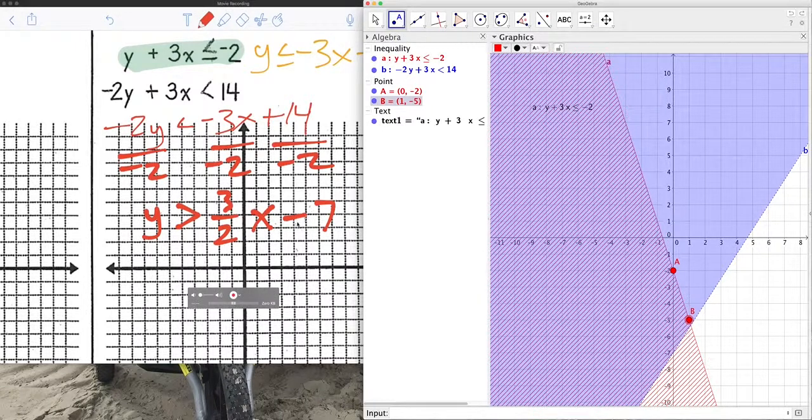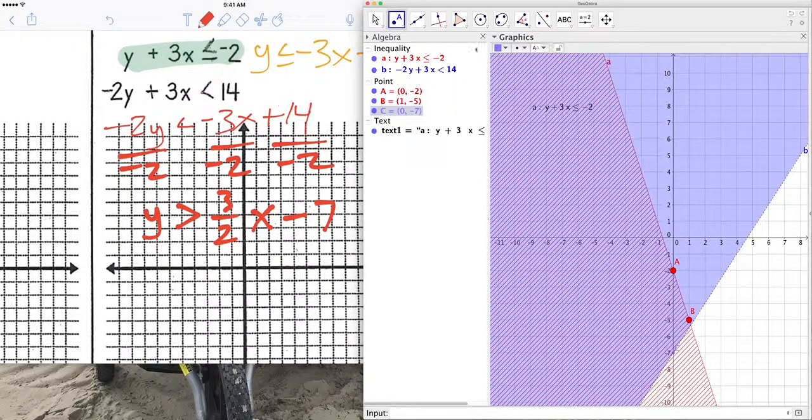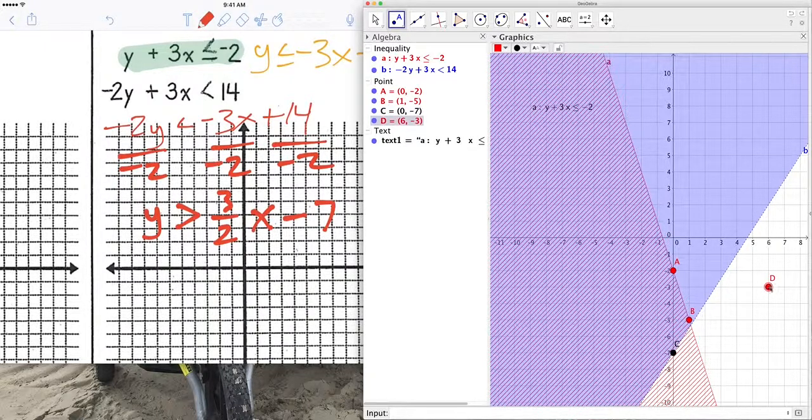So, the y-intercept is negative 7. And there it is. And the slope is 3 over 2. So, let's take this point. Let's move it. So, it's up 3, 1, 2, 3 over 2. Perfect.